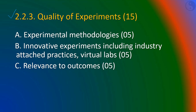Sub-criterion 2.2.3 is about quality of experiments, worth 15 marks. The quality of experiments performed by students — the methodology, observation of results, and analysis — will be inspected by the visiting team. The availability of virtual labs is expected by NBA. The relevance of experiments to the outcomes should be revealed by mapping.